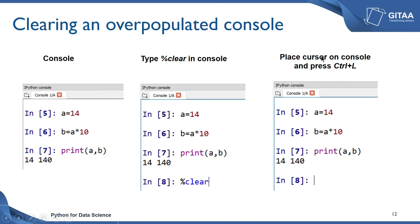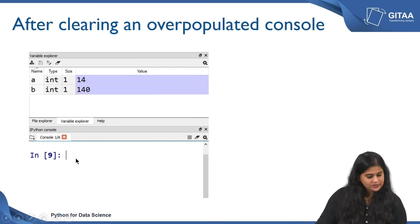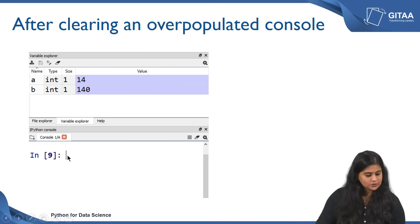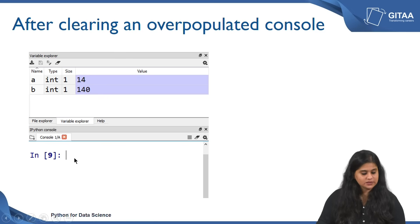An alternate way is to use the Control+L shortcut from the keyboard, which will also work. This is to clear the console. Once you clear the console, an important point to note is that only the output window is cleared — the variable explorer still remains intact and all the variables are still there. Clearing a console only means you are flushing out the output window.